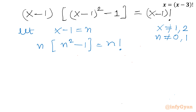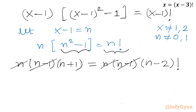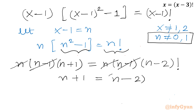Now let us apply the difference of two squares formula, and also use the recursive formula. So I will write the left-hand side as n times (n-1) times (n+1), and the right-hand side using the recursive expansion. We can cancel (n-1) from both sides since n ≠ 0 and n ≠ 1. This gives us the simplified equation: n + 1 = (n-2)!.